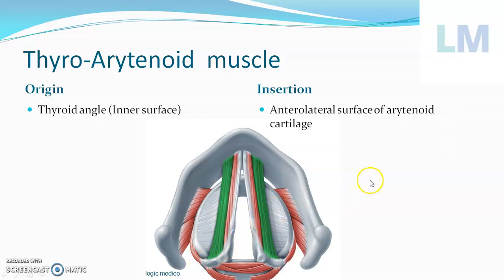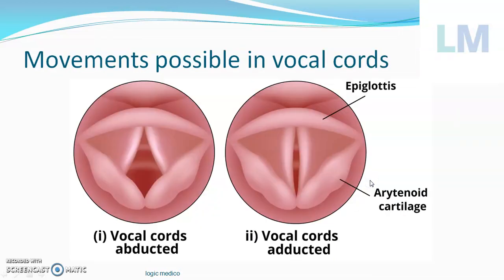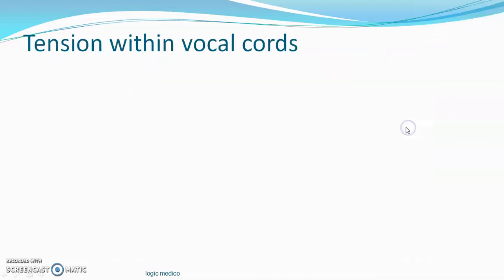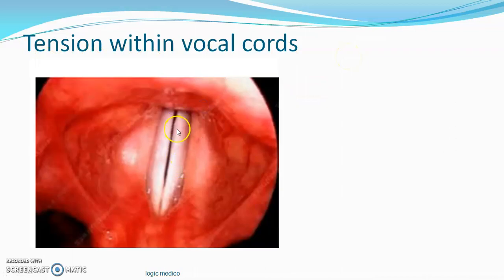The movement possible in the vocal cords — if both vocal cords move away from one another in the midline, it's called abduction of the vocal cords; if they move towards one another, it's called adduction of the vocal cords. But since this muscle is present within the vocal cords, it cannot abduct or adduct them. Instead, it will cause a change in the tension within the vocal cords, and I will tell you two things about that now.